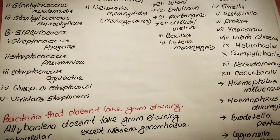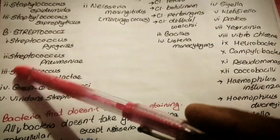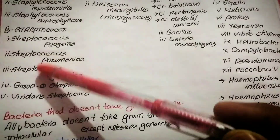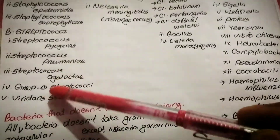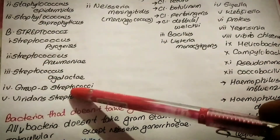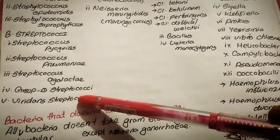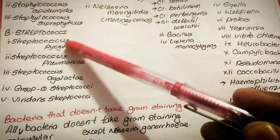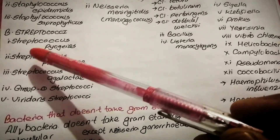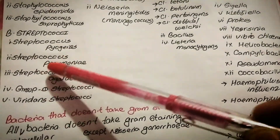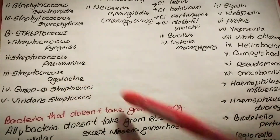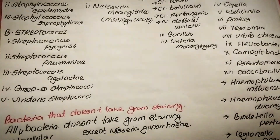Streptococci is further divided into five types: Streptococcus pyogenes, Streptococcus pneumoniae, Streptococcus agalactiae, Group D Streptococci, and Viridans Streptococci. So inside Streptococcus there are five types: Streptococcus pyogenes, Streptococcus pneumoniae, Streptococcus agalactiae, Group D Streptococci, and Viridans Streptococci.